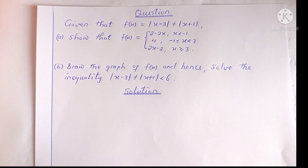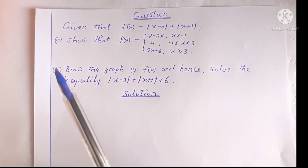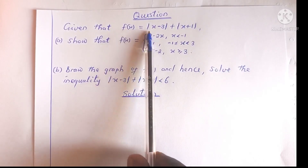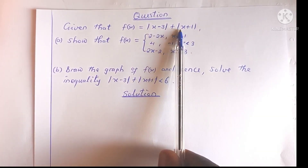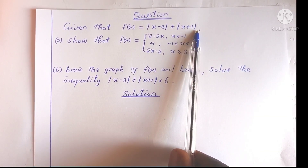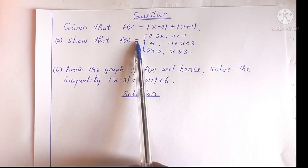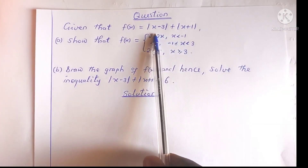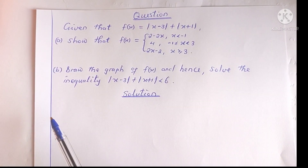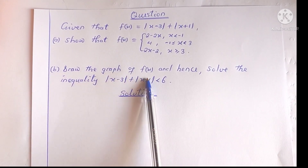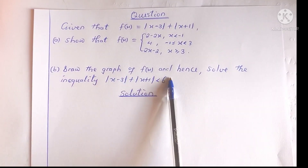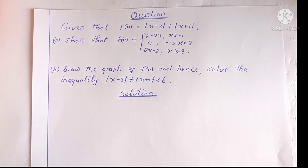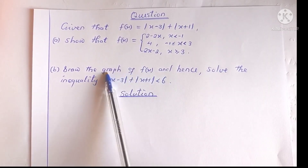In this question we are given the function f of x, which is the absolute value of x minus 3 plus the absolute value of x plus 1, and we have been asked to express f of x as a piecewise function. We also need to draw the graph of f of x and use the graph to solve an inequality to find the range of values of x for which it is satisfied.